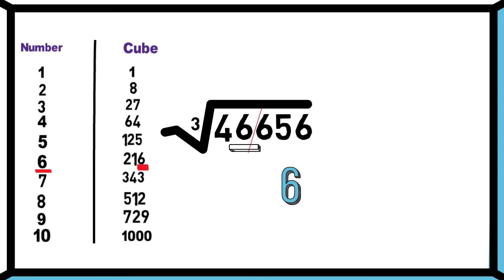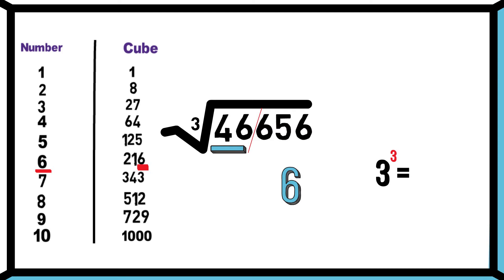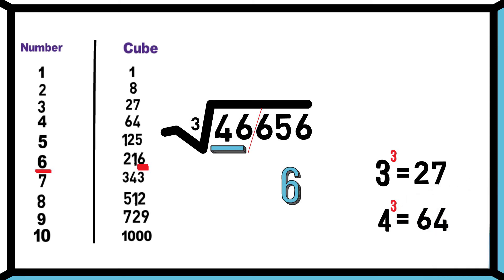Now for the starting digit, we know that 3 cube is 27, 4 cube is 64. Here, 46 lies between 27 and 64.